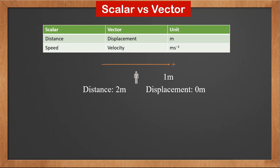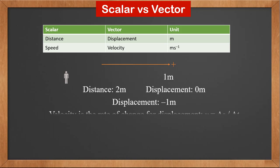Displacement is a vector. So if we set the right direction as positive, and the person moves to the left by 1 meter, then the displacement is minus 1 meter. Velocity is the rate of change for displacement. We use S for displacement and V for velocity. Then V is delta S over delta T. It's a vector.